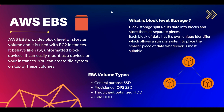You might be wondering what block storage means. Block storage splits data into blocks and stores them as separate pieces. Each block of data has its own unique identifier, which allows the storage system to place smaller pieces of data where it works best. Basically, when you store data, it is chopped into blocks and stored in different blocks — each block has its own unique number, and the CPU fetches data using that unique identifier.